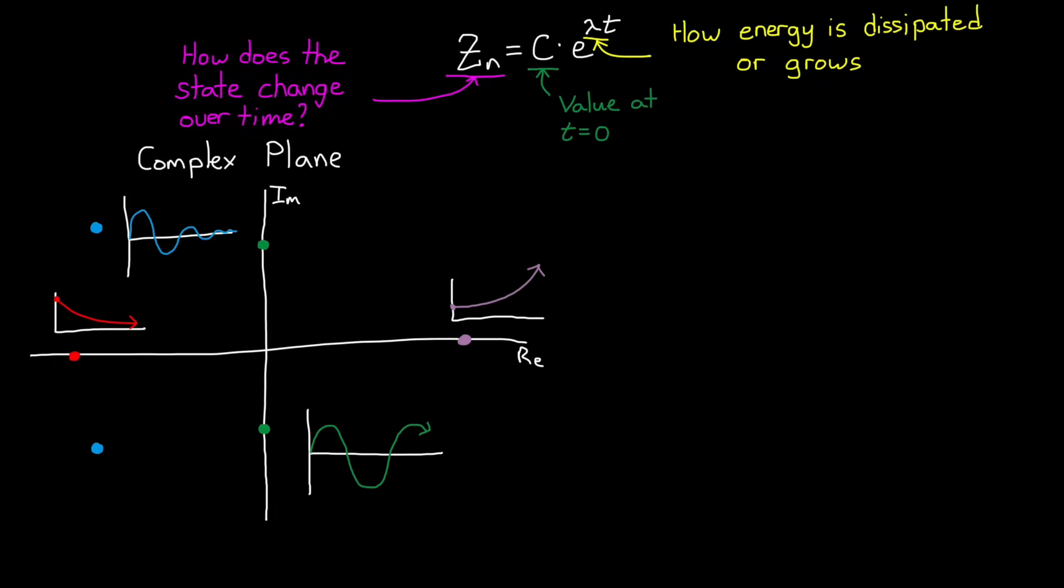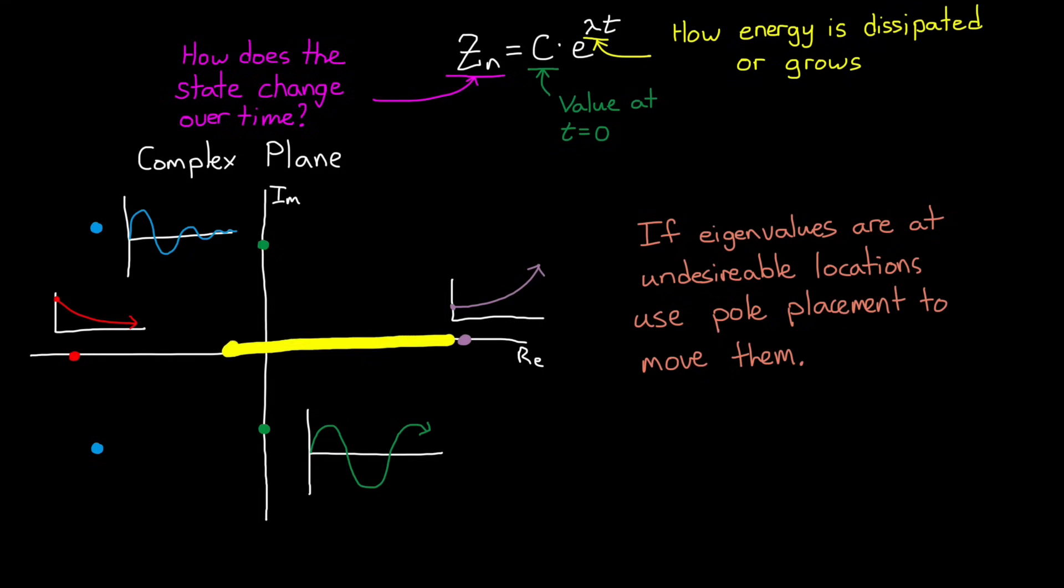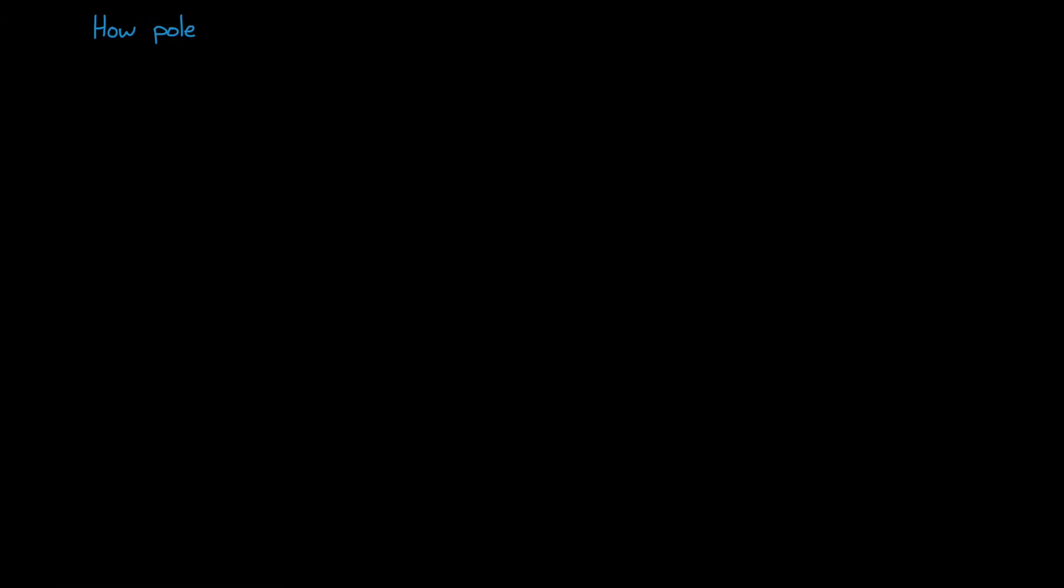Now, I know this was all very fast, but hopefully it made enough sense that now we can state the problem we're trying to solve. If our plant has eigenvalues that are at undesirable locations in the complex plane, then we can use pole placement to move them somewhere else. Now certainly if they're in the right half plane it's undesirable since they'd be unstable, but undesirable could also mean there's oscillations you want to get rid of, or maybe just speed up or slow down the dissipation of energy in a particular mode.